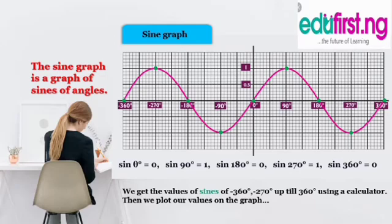Punch on your calculator, sine, open bracket, minus 360 degrees, close the bracket. Equal to, what you would get is 0. So, we simply mark the point where minus 360 degrees and 0 intersect. And that is the first point.